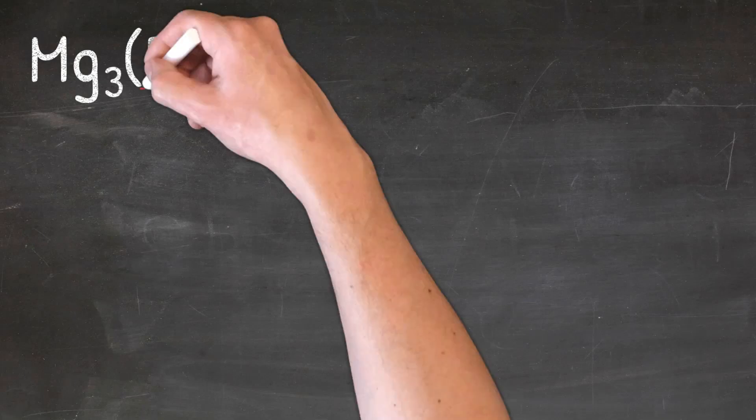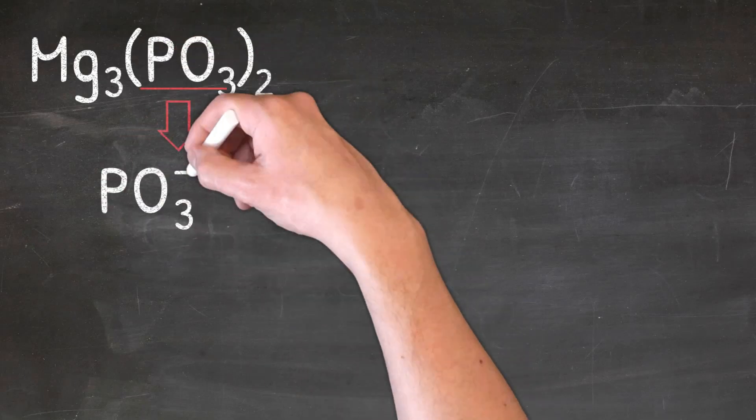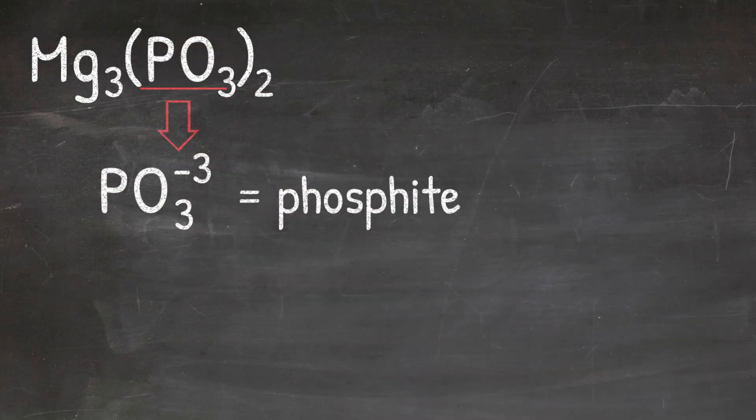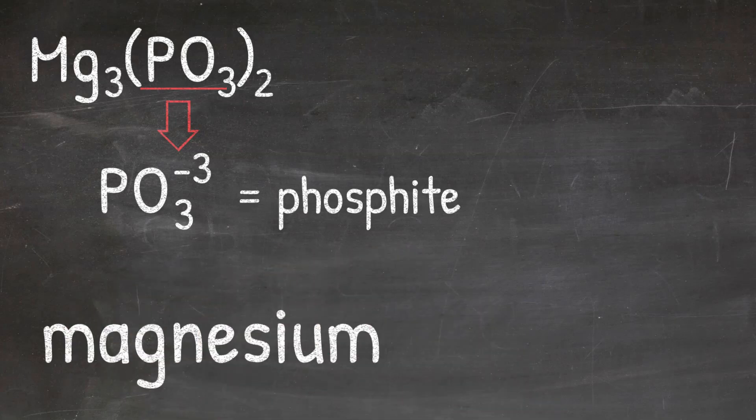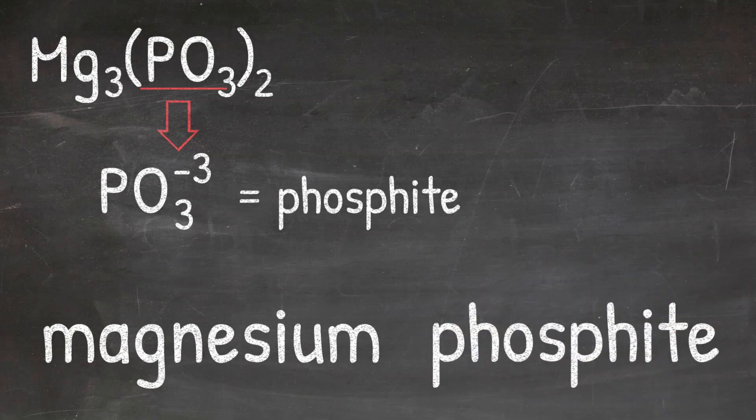The polyatomic ion present is PO3, 3 minus, which is phosphite. So when I name Mg3(PO3)2, the first element will keep its name, and that's magnesium, so I'll write magnesium. The polyatomic ion will also keep its name, so then I'll write phosphite. So the name of Mg3(PO3)2 would be magnesium phosphite.